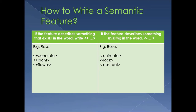Another feature that exists in the rose is that it's a plant, and another feature is that it's a flower. So the rose is: plus concrete, plus land, and plus flower. We write plus, plus, plus to show that these features are present in the word.